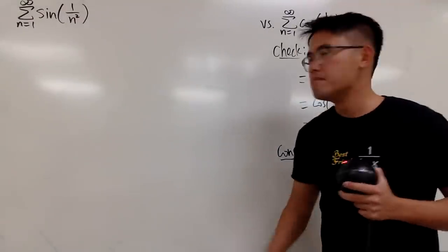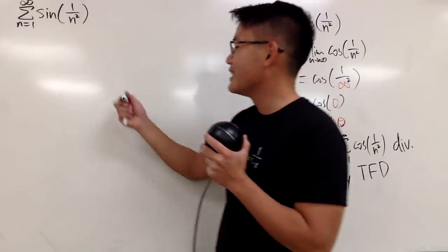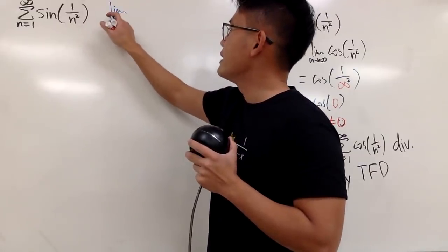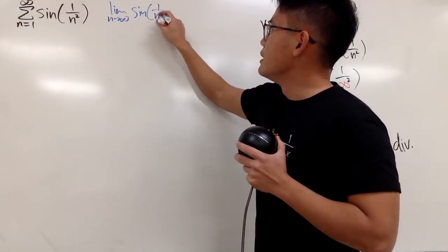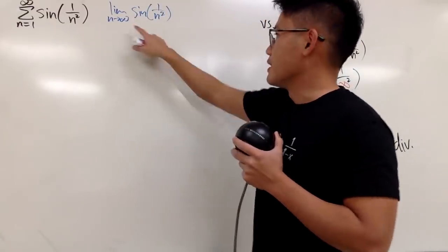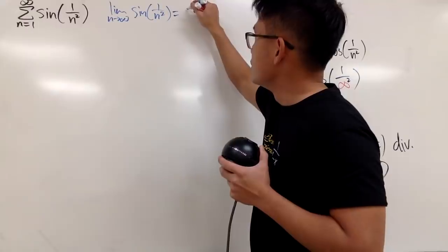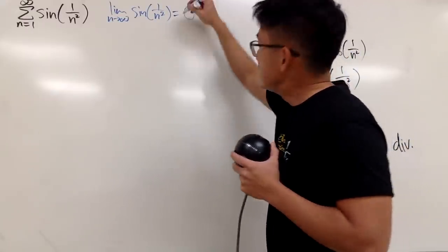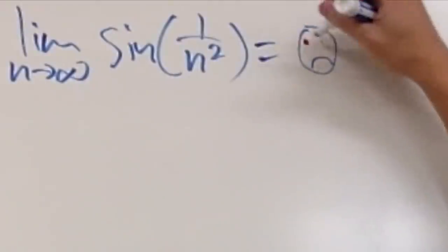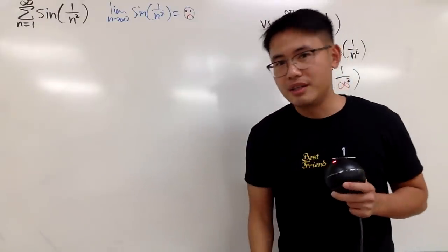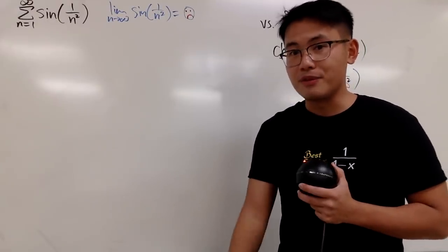Now, if this is a sine situation, unfortunately I cannot do that. If you take the limit as n goes to infinity of the sine formula, put infinity in: 1 over infinity squared is 0, sine of 0 gives you 0. When you get 0, this is a sad face situation, because we cannot draw any conclusion.